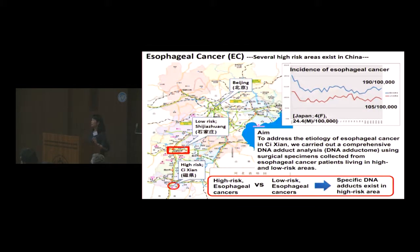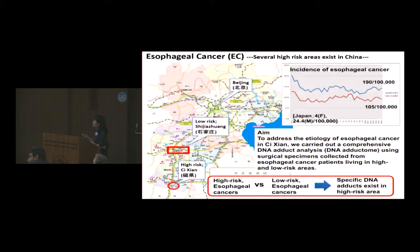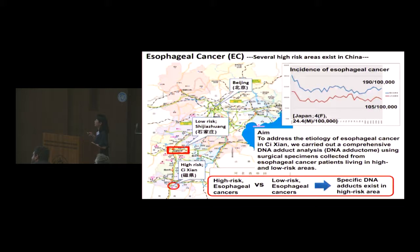I'd like to show one typical example today. We are analyzing esophageal cancer etiology in China using the adductomics approach. As you know, China has a high incidence and mortality rate for esophageal cancer, with several high-risk areas. Cixian, located here, is one of the high-risk areas, and this figure shows the incidence of esophageal cancer in this region — quite high incidence was observed in males.